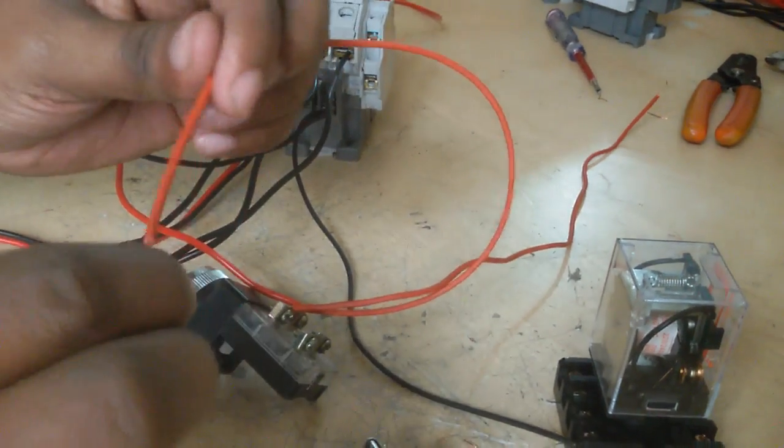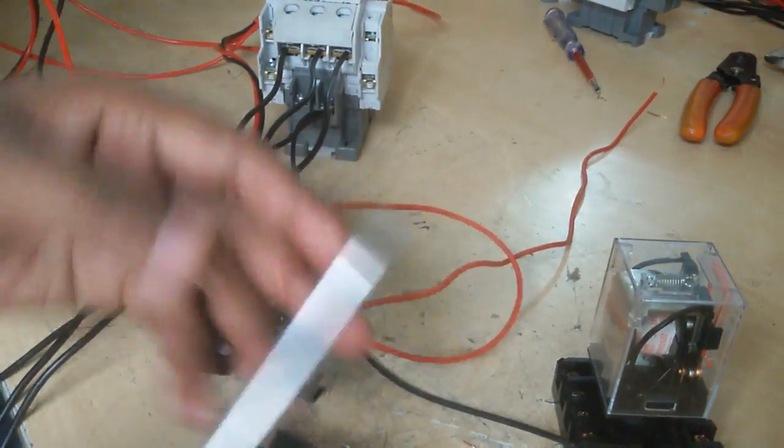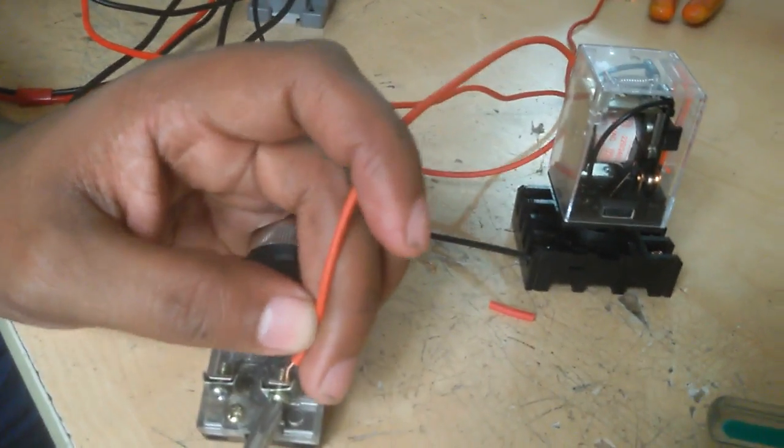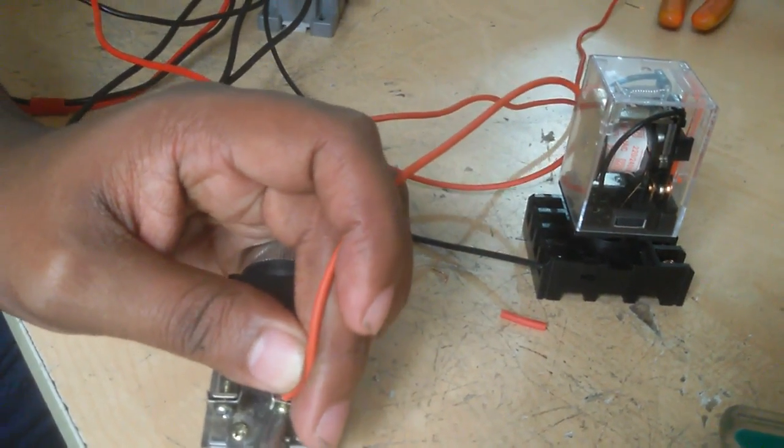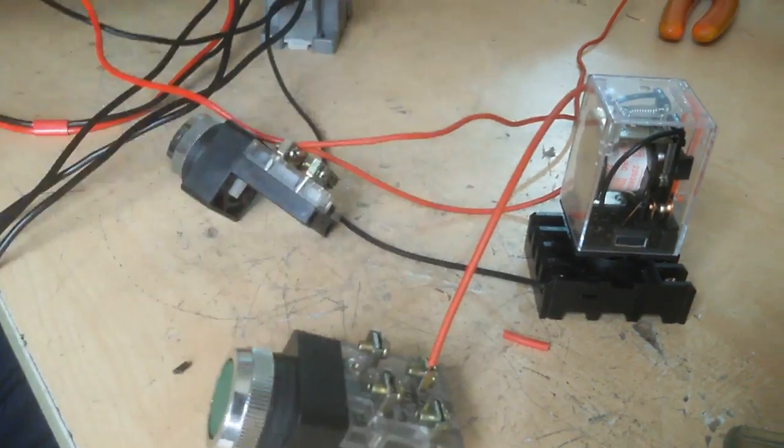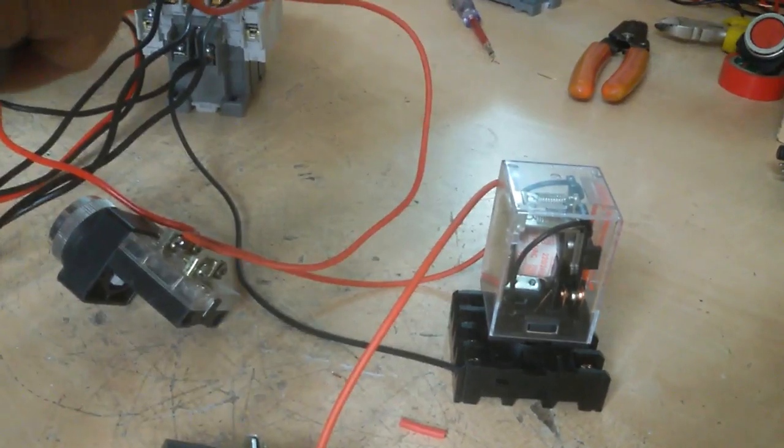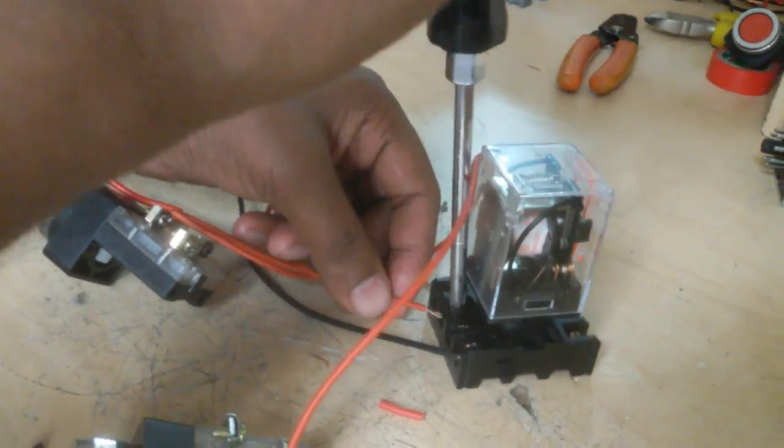And this is the one-way connection to the start switch. And the other way is connected to the relay NC.